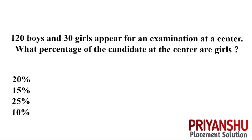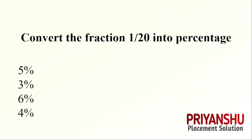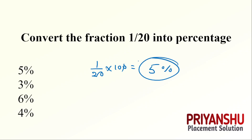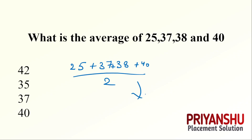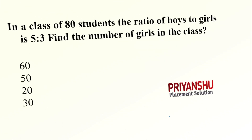Convert the fraction 1/20 into percentage: 1/20 multiplied by 100 = 5 percent. For the average question: 25 plus 37 plus 38 plus 40 divided by the count — let me know in the comment box if you have watched all the questions.